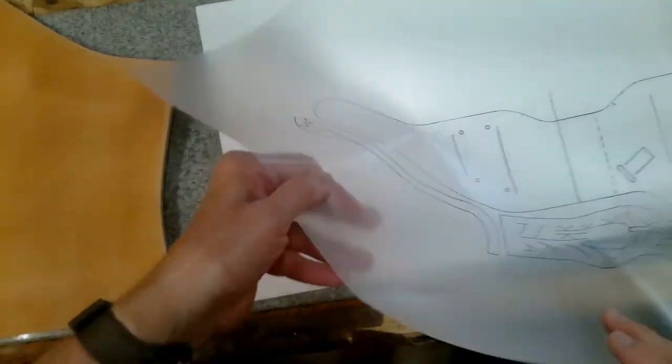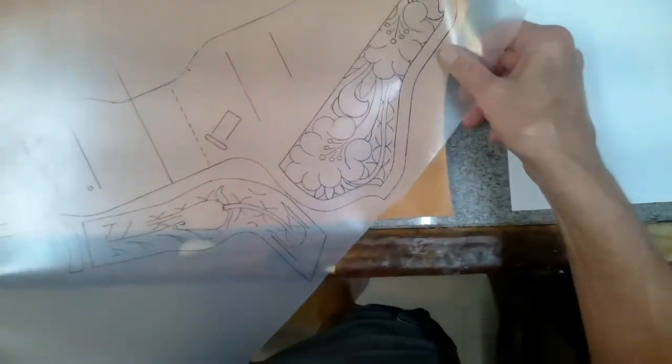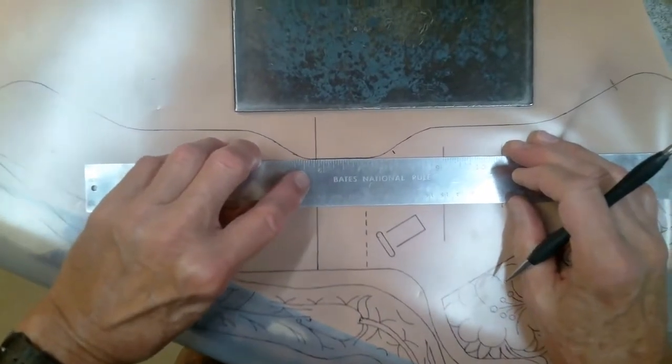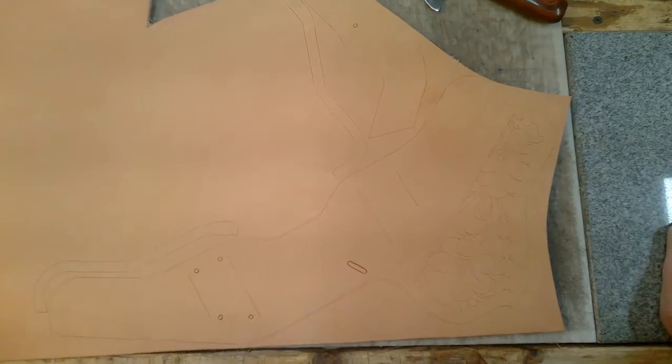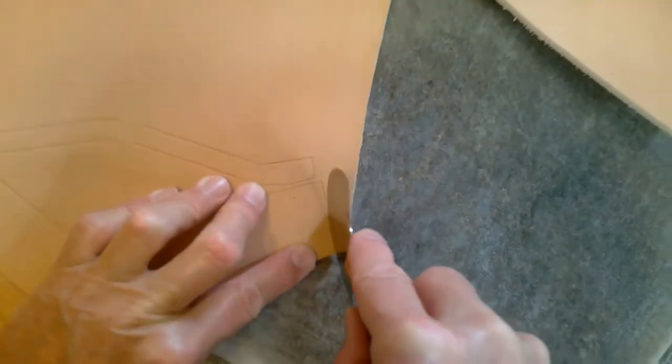Next, lay the tracing film on damp leather and begin transferring the pattern to the leather with a stylus. I like to start with a straight edge, transferring all the straight lines first. Cut out the holster parts once all are transferred to the damp leather.